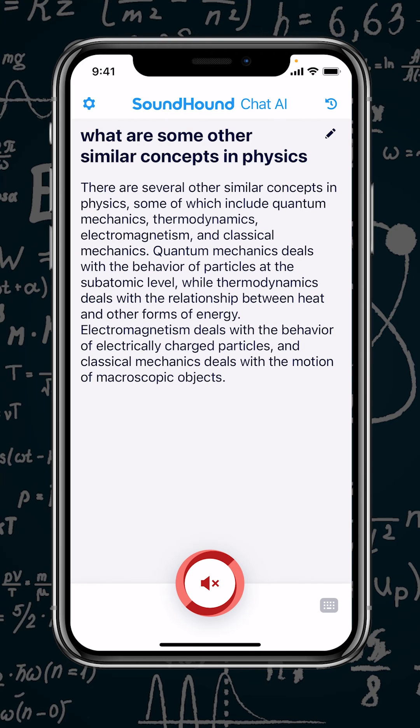Quantum mechanics deals with the behavior of particles at the subatomic level, while thermodynamics deals with the relationship between heat and other forms of energy. Electromagnetism deals with the behavior of electrically charged particles, and classical mechanics deals with the motion of macroscopic objects.